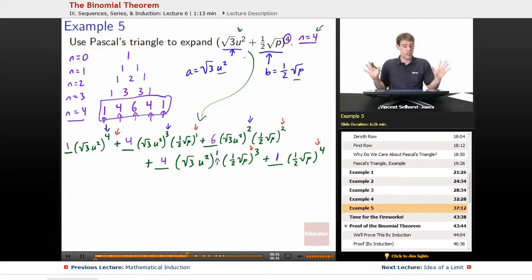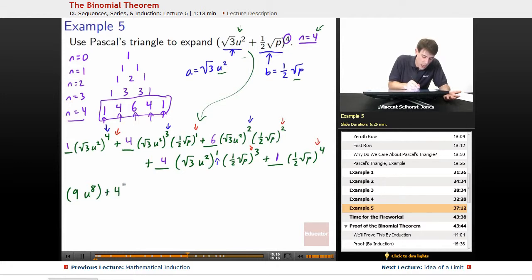At this point, we can now finally actually simplify this guy. Let's do it in two steps. So 1, we'll just have that disappear. Root 3u squared to the 4th, well, root 3 squared is 3, so root 3 to the 4th is 3 squared, so root 3 to the 4th is 9. u squared to the 4th is u to the 8th, plus 4 times root 3 cubed is going to be 3 root 3. u squared cubed is u to the 6th.